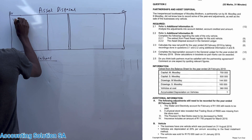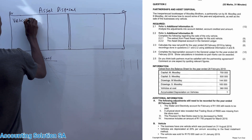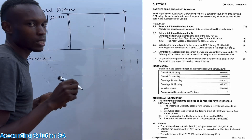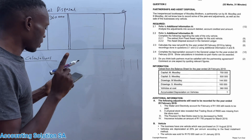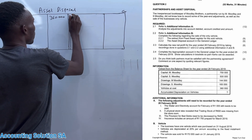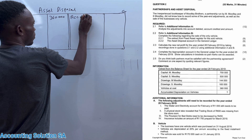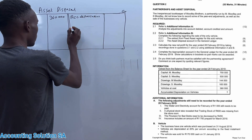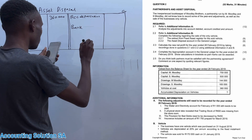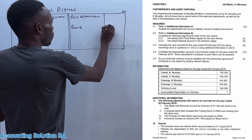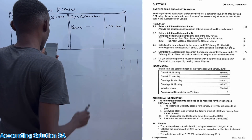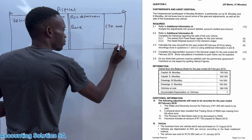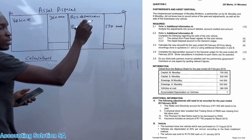Let's start with the cost price. On the debit side we have the vehicle, and the cost price is 360,000 — we take the whole amount because the business has only one vehicle. After that we will have accumulated depreciation on the credit side, which we still have to calculate. Then we have bank — this was sold for 170,000 cash.